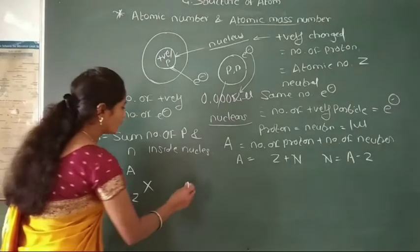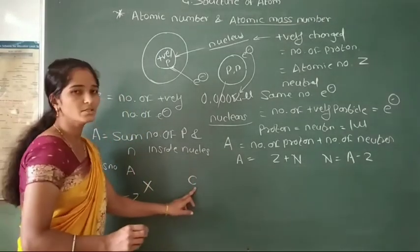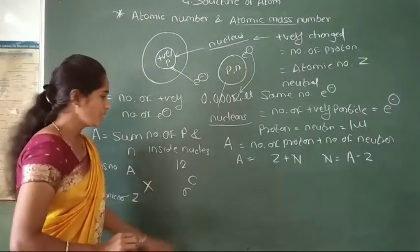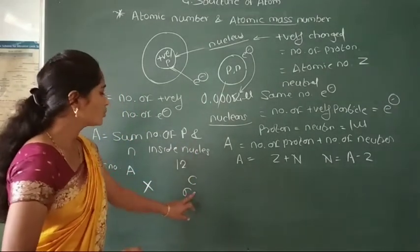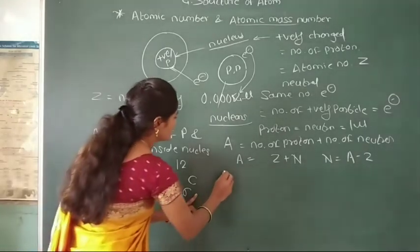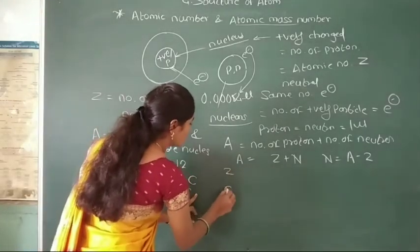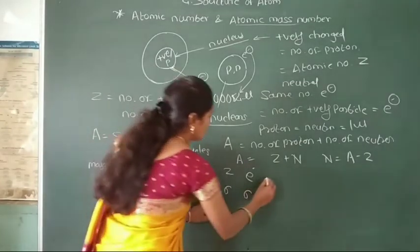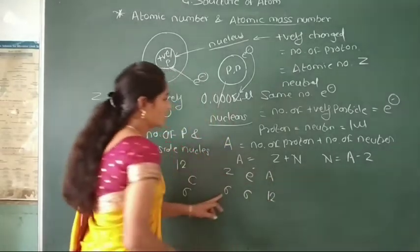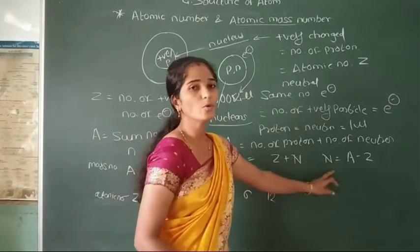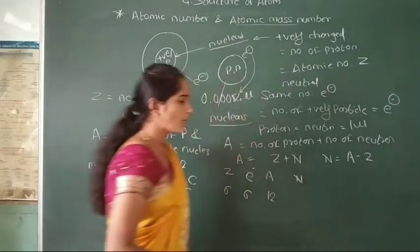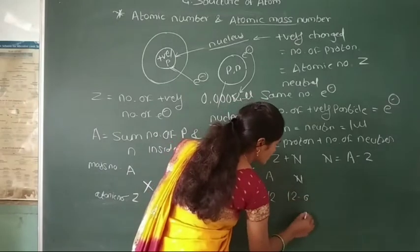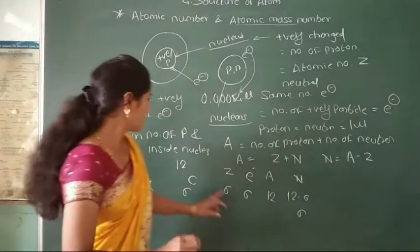Let us take the example of carbon, with atomic number 6 and mass number 12. In carbon, the number of protons equals 6 — that means Z = 6. The number of electrons is also 6. The atomic mass number is 12. The number of neutrons is calculated by A minus Z = 12 minus 6 = 6.